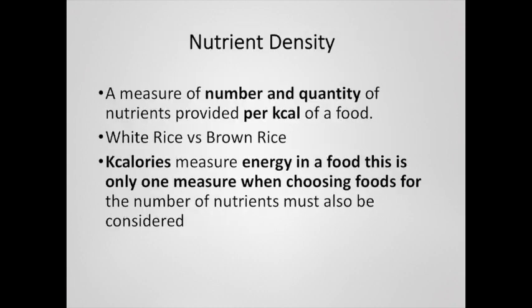Nutrient density is a measure of the number and quantity of nutrients provided per kilocalorie of energy in a food. An example is the comparison of white rice versus brown rice. White rice has been bleached, meaning it has lost a large number of vitamins and minerals that were naturally inside it in an attempt to also remove microbial species. Brown rice has all of those still in it and so it is a more nutrient-dense food.